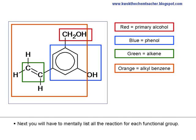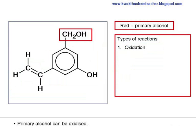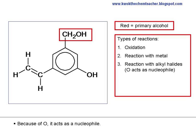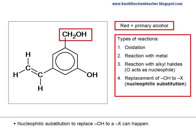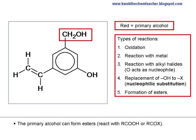Next, you will have to mentally list all the reactions for each functional group. A primary alcohol can be oxidized. It can also react with metals. Because of the oxygen, it acts as a nucleophile. Nucleophilic substitution to replace OH with a halide X can happen. The primary alcohol can also form esters. This is the list of reactions that the primary alcohol has.